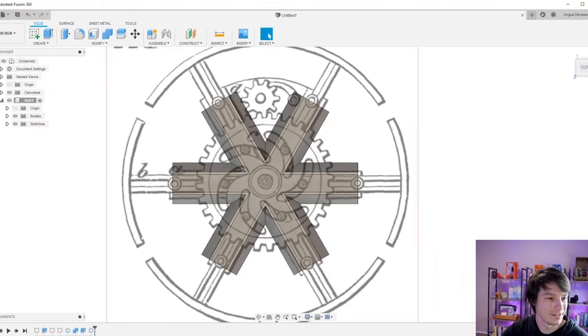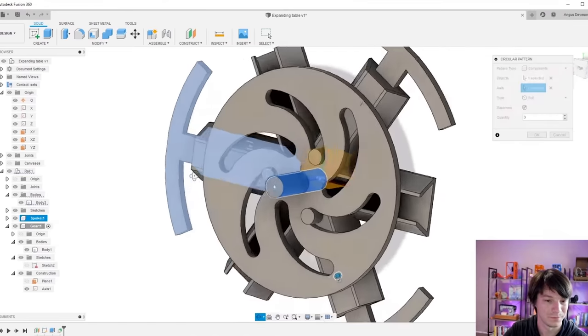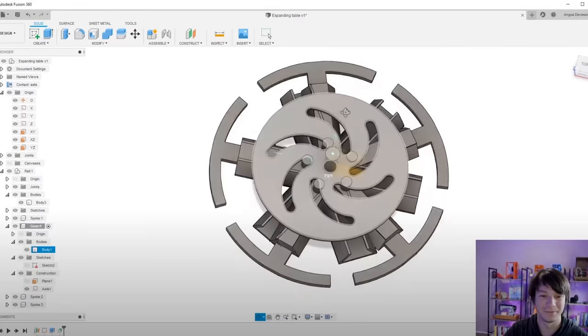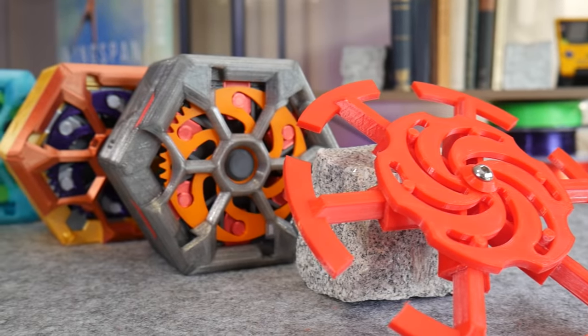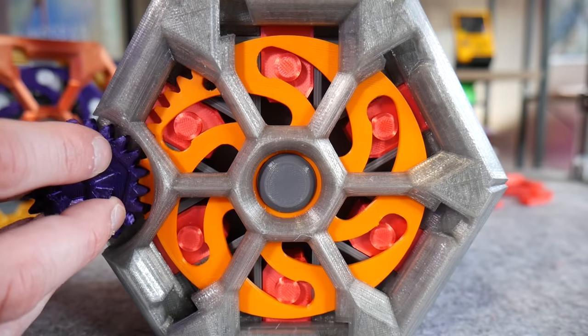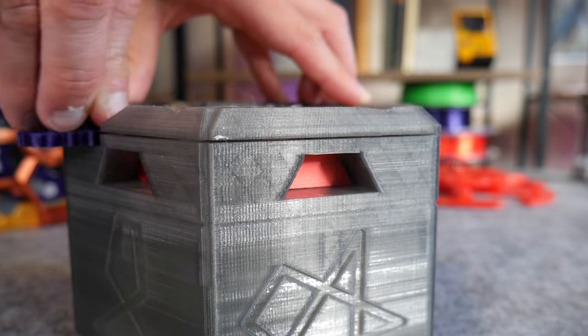Many months ago one of my Patreon supporters suggested I take a look at the expanding pulley design and try to recreate it in CAD, and in this video I'll show you how I reverse-engineered this forgotten mechanism and then used it to create this fully 3D printed lockbox.